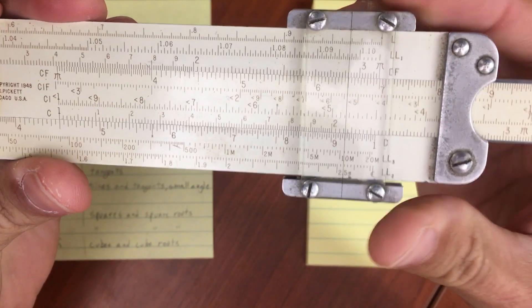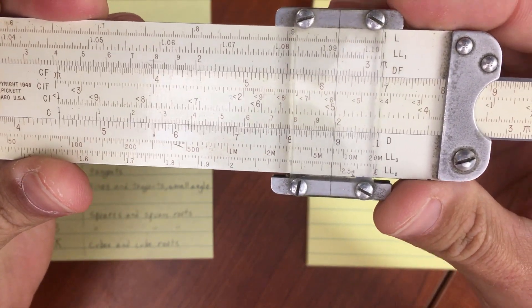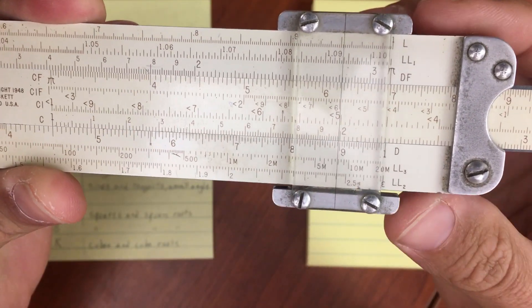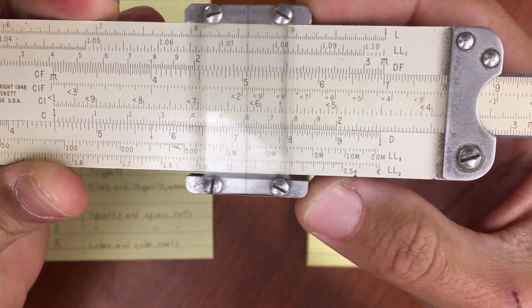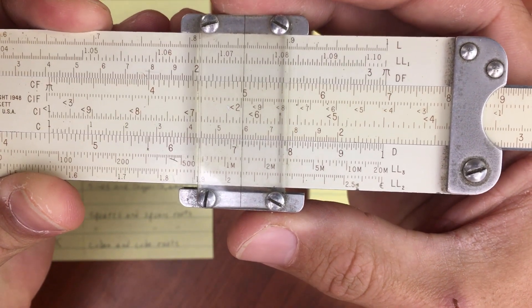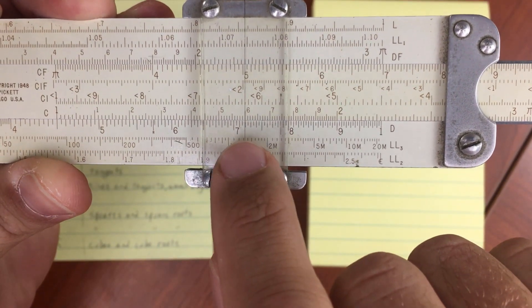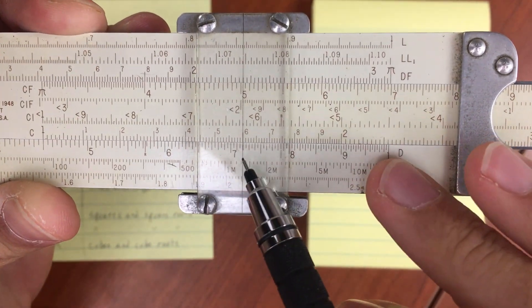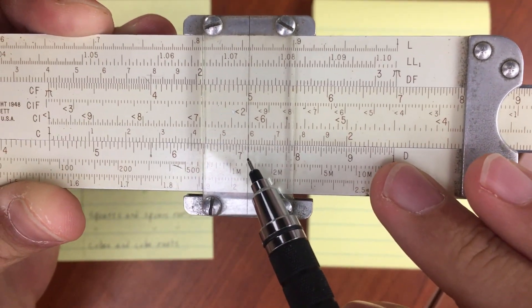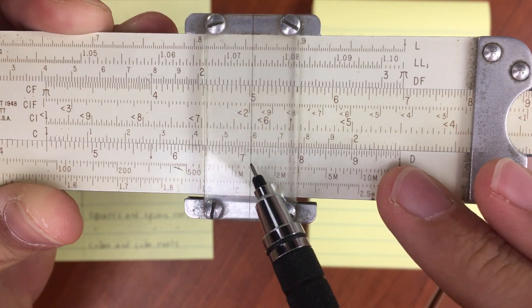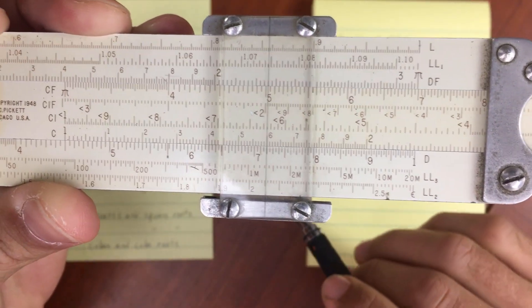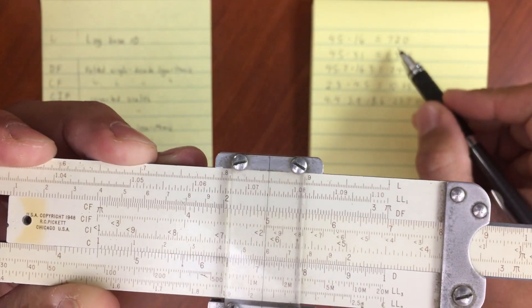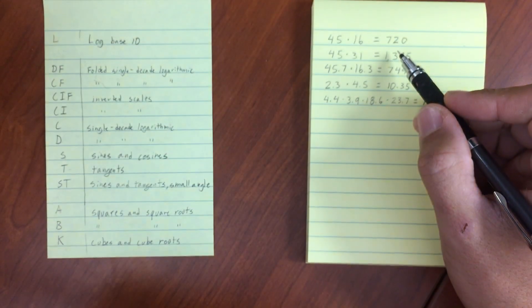And then move our hairline over here to 1.6. And we've got 1, 1, 2, 3, 4, 5, 6. So move that over and then read our final value off of the D scale. So our final value is 7, 1, 2. So 7.2 is our final value. Now that's not going to be 7.2 because our numbers are 45 and 16. It's not going to be as big as 7,200. So we know that 720 is going to be our answer.